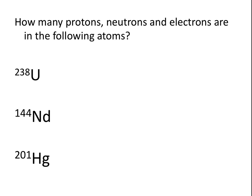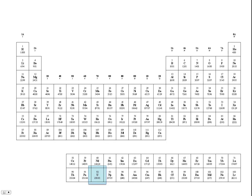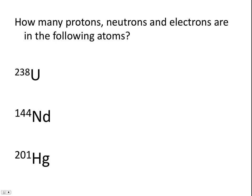Let's take a look at some examples — how many protons, neutrons, and electrons are in the following atoms? Looking at our first example, the symbol U stands for uranium. When we look up uranium on the periodic table, we see that the atomic number is 92. Remember, the top number on the periodic table is the atomic number, and the bottom number is a weighted average of the mass number of all naturally occurring isotopes. Because the atomic number always equals the number of protons, uranium must always have 92 protons. In a neutral atom, the number of protons equals the number of electrons, so uranium also has 92 electrons. The number of neutrons equals the mass number, 238, minus the atomic number, 92, so this isotope of uranium has 146 neutrons.